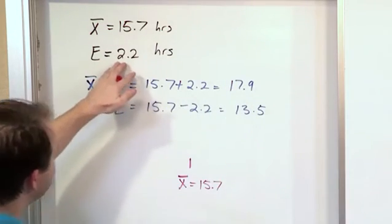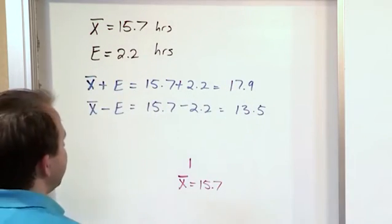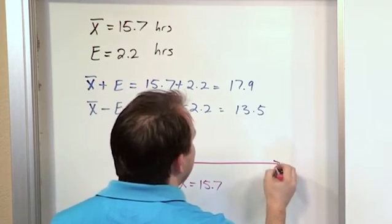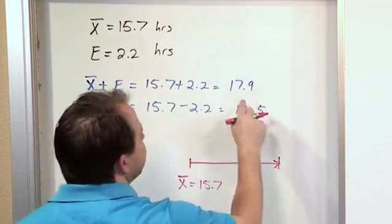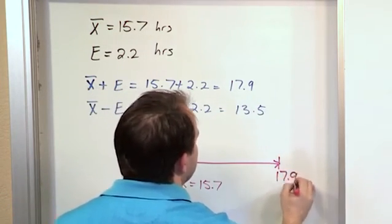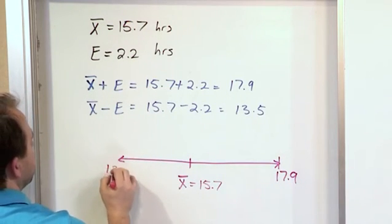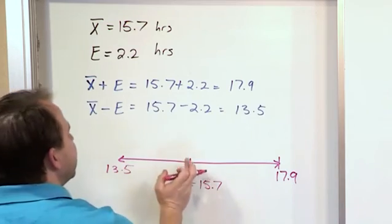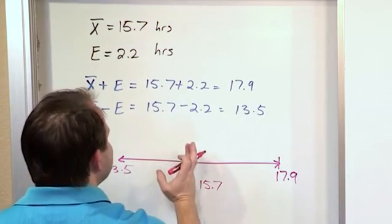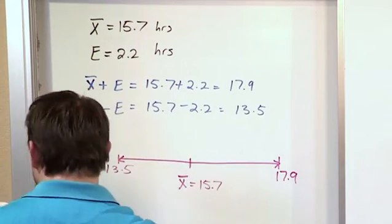We know that's not right. That's why we're given the margin of error. So this confidence interval is going to extend up from the point estimate to 17.9, and it's also going to extend below that to 13.5. Do you see how the point estimate lies in the center of this thing we're calling the confidence interval?